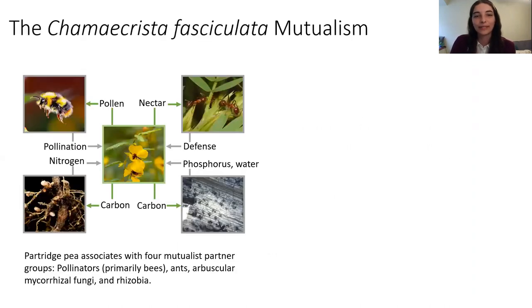This is the Chamaecrista fasciculata mutualism which involves a plant and its four partners: pollinators, ants, rhizobia, and mycorrhizae.